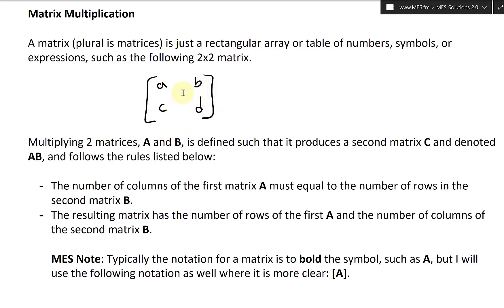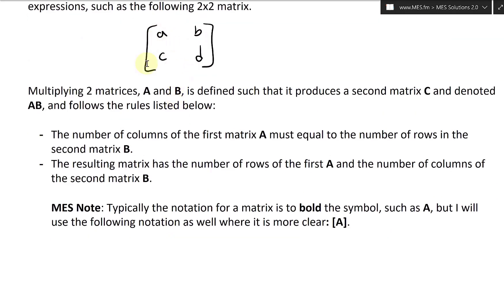There are 4 elements for this 2x2 matrix, and you could make them whatever you want. So now let's take a look at multiplying two matrices, such as A and B. This is defined such that it produces a second matrix C, and it is denoted by AB, following the rules listed below.